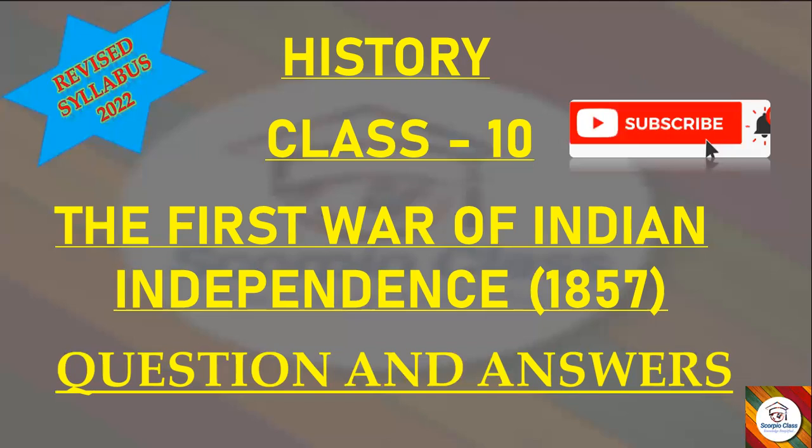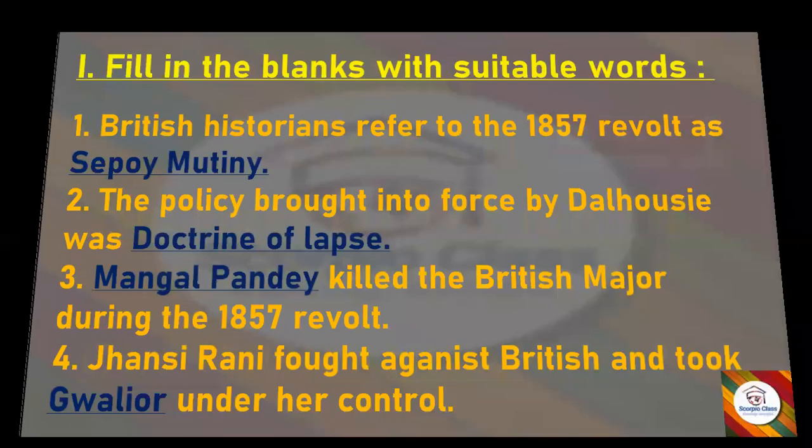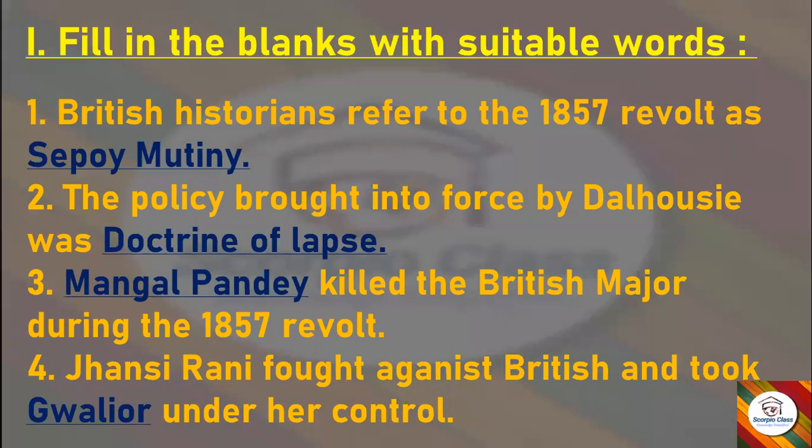Now let's get started with the first main section: Fill in the blanks with suitable words. First: British historians refer to the 1857 revolt as — answer: Sepoy Mutiny. Next: The policy brought into force by Dalhousie was — answer: Doctrine of Lapse.